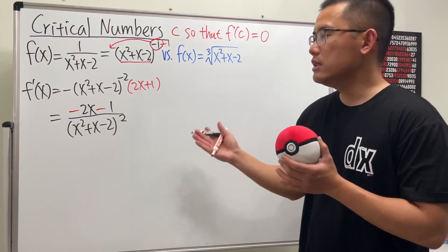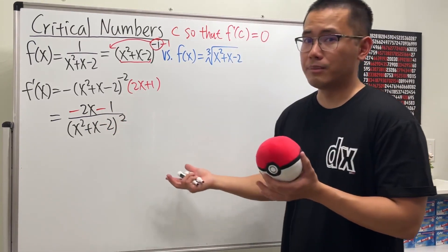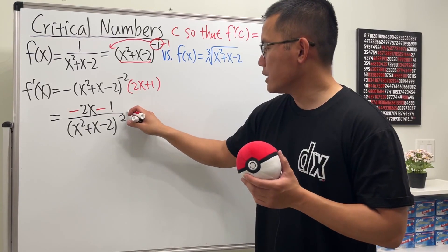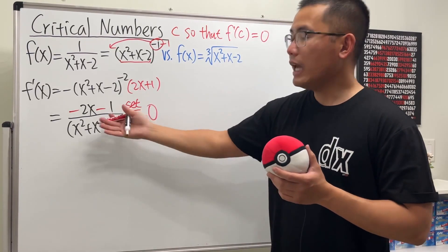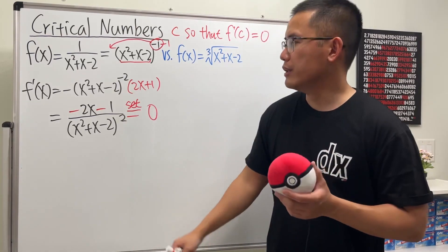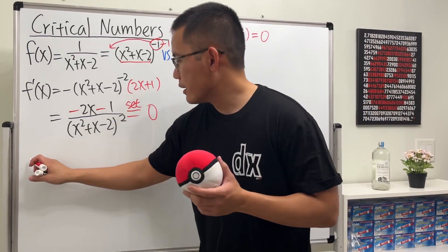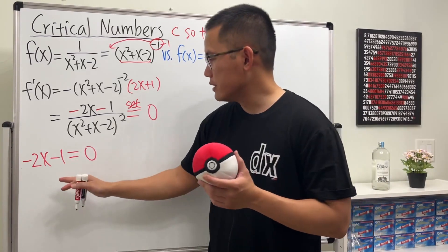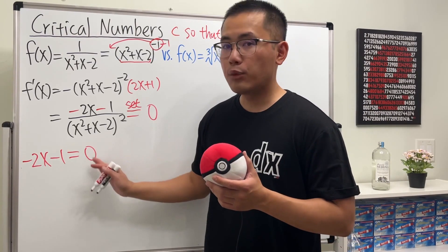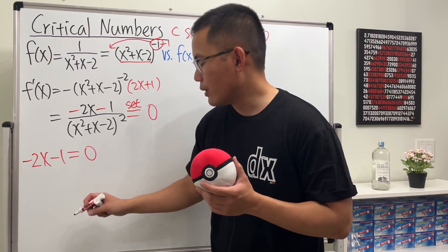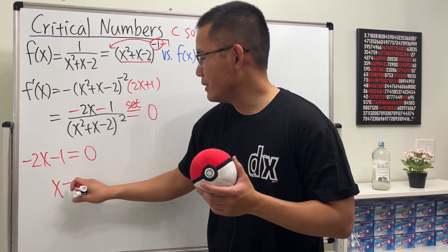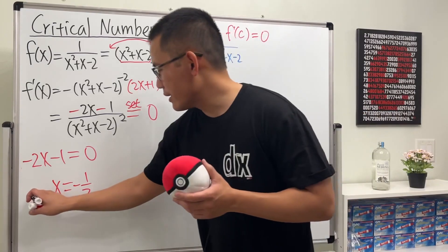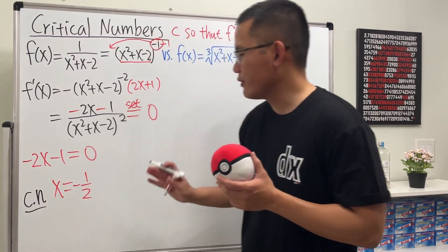We have a derivative with a fraction. For Case 1, we set the derivative equal to zero. When a fraction equals zero, we only need to set the numerator equal to zero: negative 2x minus 1 = 0. Solving, we add 1 to both sides and divide by negative 2, giving x = negative 1/2. This is the first critical number.